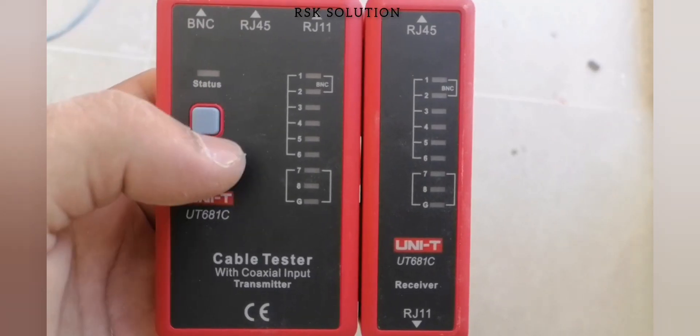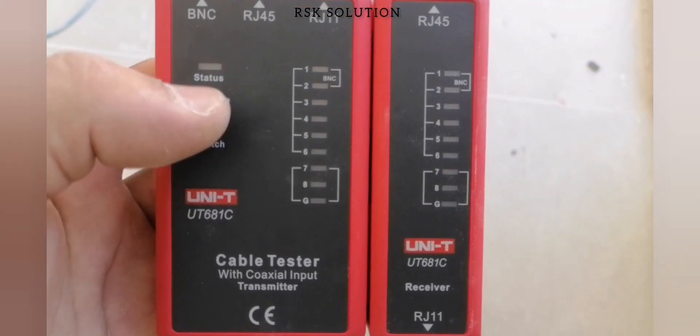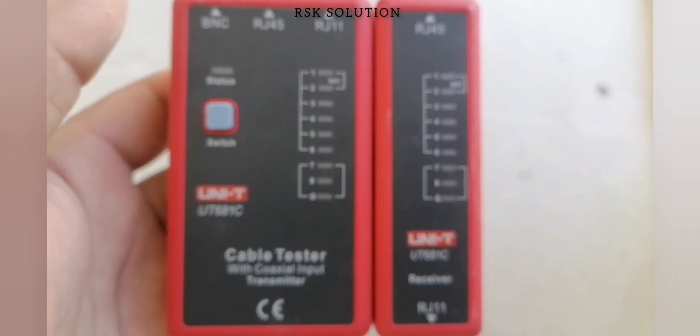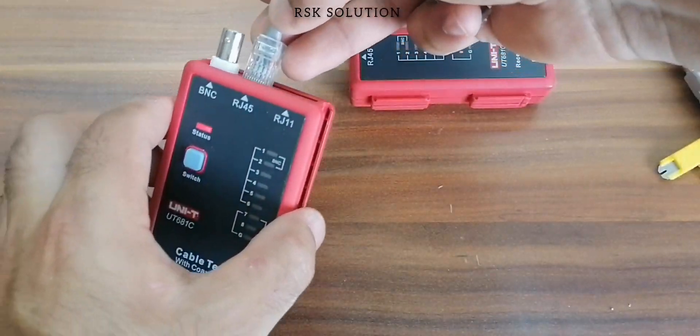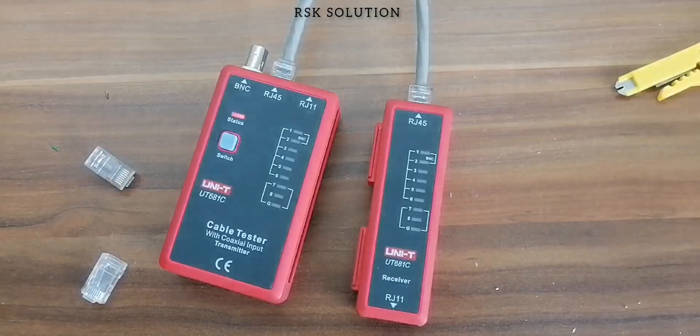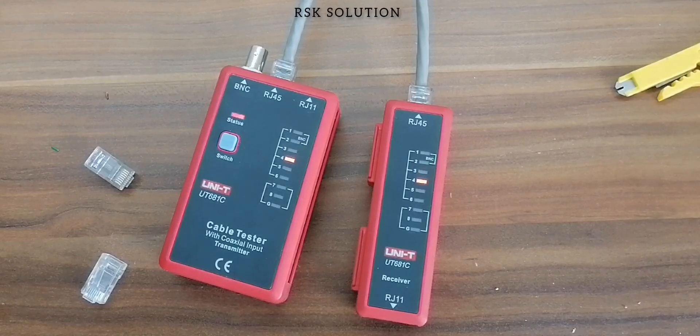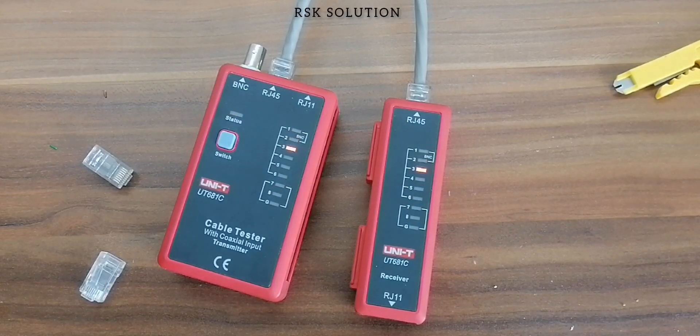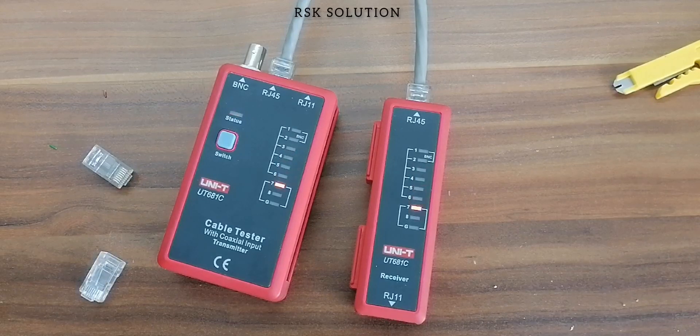Now we are going to check them, the connection is good or not. First switch on the tester, this is the cable tester. We put one side in one tester, and other side in the other side of tester and now you can see all the numbers are showing. If the numbers are showing on the same side, 1, 2, 3, 4, 5, 6, it means they are good.